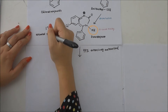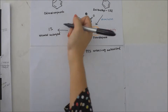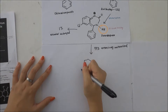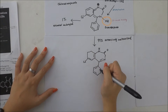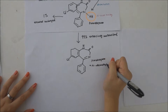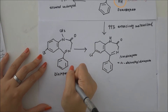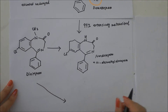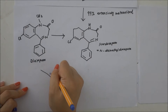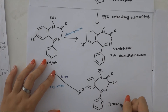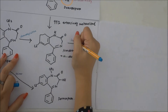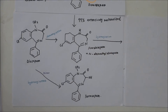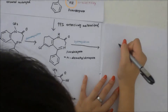99% of demoxepam are extensively metabolized to nordazepam, which is an active metabolite, whereby diazepam undergoes hydroxylation to form temazepam. At the same time, diazepam undergoes demethylation to also form nordazepam.